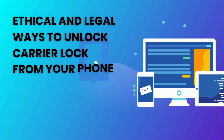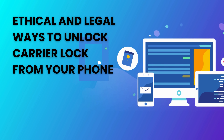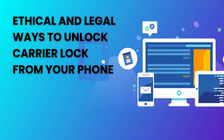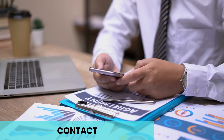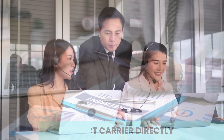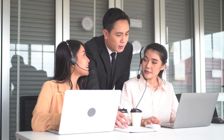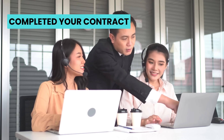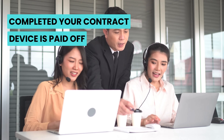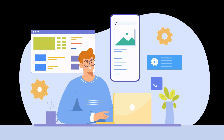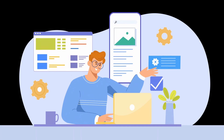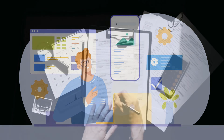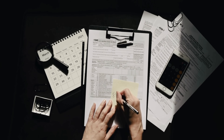There are several ethical and legal ways to remove the carrier lock from your phone. One of the most common methods is to contact your carrier directly. Many carriers will unlock your phone if you've fulfilled your contract or paid off your phone in full. They may have specific requirements, so it's best to check their policies on their website or customer service. Usually, this involves filling out a request form or speaking with a customer service representative.